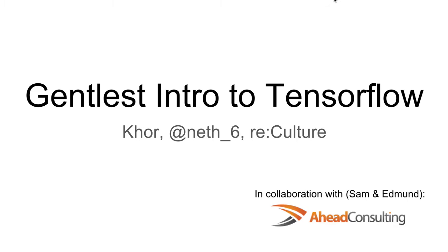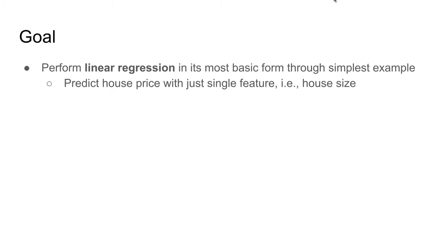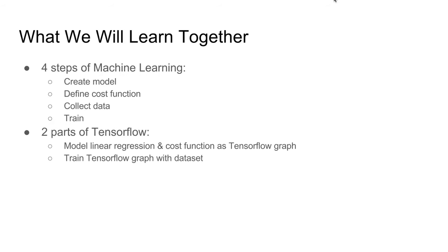Welcome to the gentlest intro to TensorFlow. My name is Kaur. We are going to perform linear regression in its most basic form using TensorFlow. We are going to predict the house price with just a single feature, that is the house size. We are going to walk through four steps of machine learning, and show how these four steps collapse into two parts of TensorFlow: how to create a model as a TensorFlow graph, and then train the TensorFlow graph with our dataset.